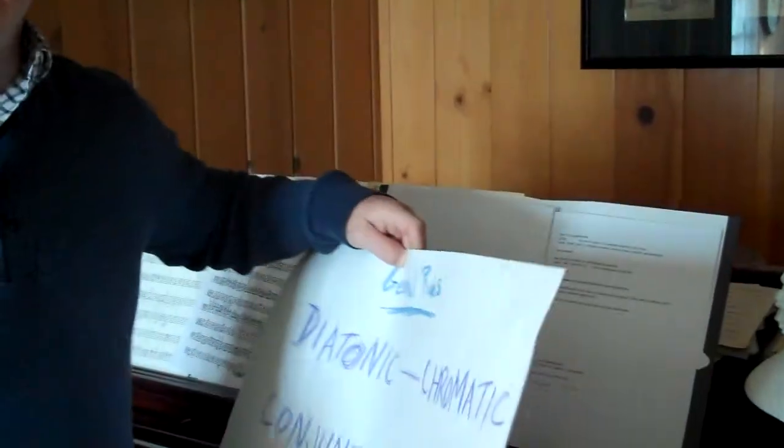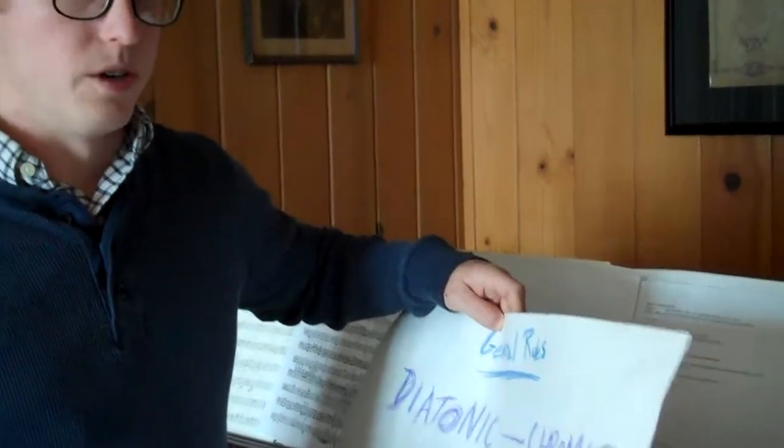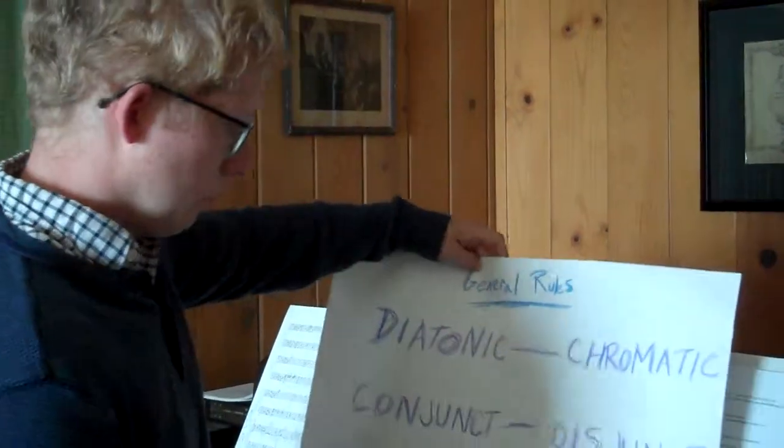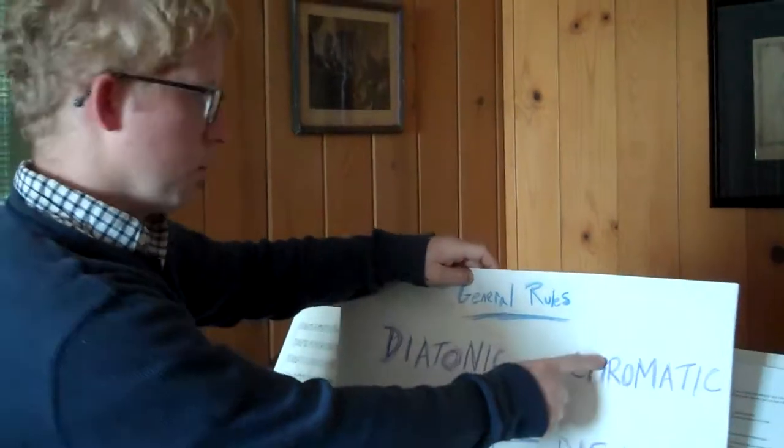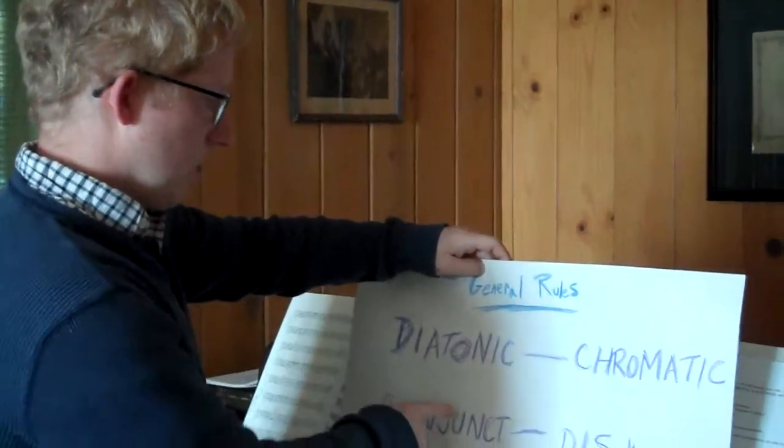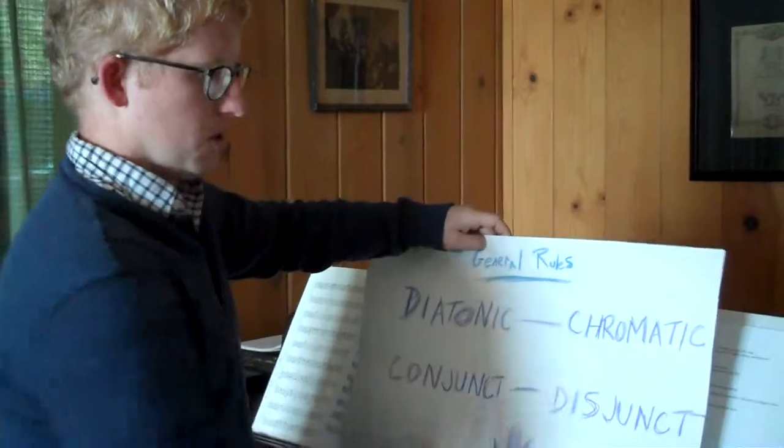Disjunct movement, on the other hand, is done in leaps and skips. So a minor third or greater would be disjunct movement. And in general, diatonic is preferable to chromatic movement, and conjunct is preferable to disjunct movement.